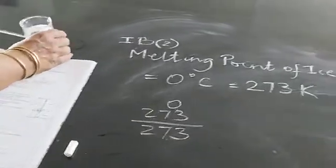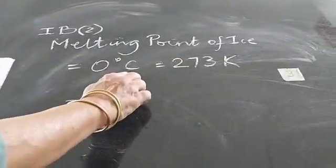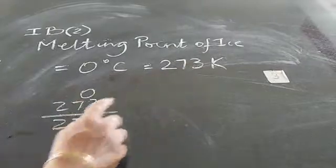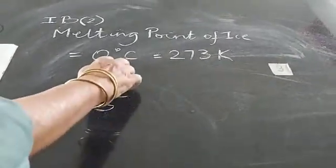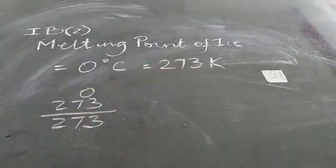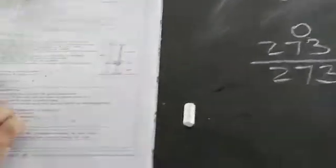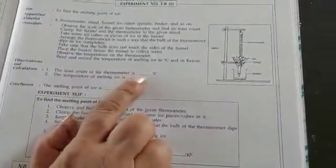So I've shown you here melting point of ice is 0 degree centigrade. How do I convert it to Kelvin? 0 plus 273 is 273. So your observation will be the least count of the thermometer is 1 degree centigrade.